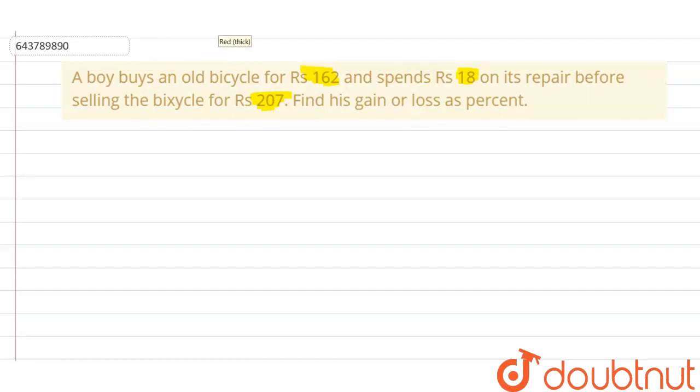So let's start the question. We know that the old bicycle cost rupees 162, and the guy spent 18 rupees to repair it, so that also spent from his pocket, rupees 18. So now the old bicycle is 180 rupees.